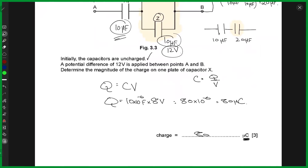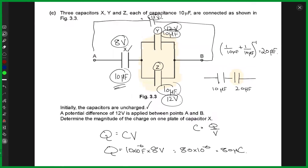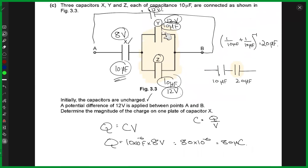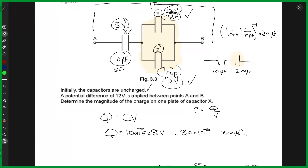So we have the combined capacitance, and we now need the potential difference across capacitor X. For components connected in series, the potential difference distributes, and we can find the voltage across X. With the total series combination, the potential difference across the parallel pair Y and Z equals 12 volts applied. On capacitor X, it would be 8 volts stored.